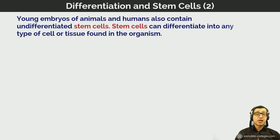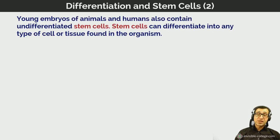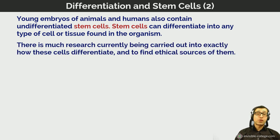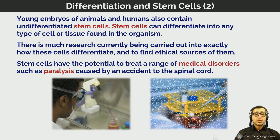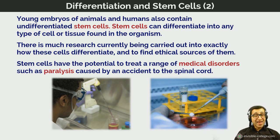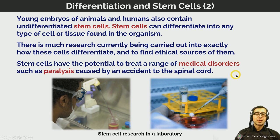There is extensive research into how embryonic stem cells differentiate and how to find ethical sources of them, because the potential for using them in medicine is enormous. Stem cells have the potential to treat a range of currently untreatable medical disorders, such as paralysis caused by spinal cord accidents. However, one of the main sources of cells that can differentiate into any tissue is embryos, and obtaining those stem cells often destroys the embryo, raising significant ethical considerations and dilemmas.